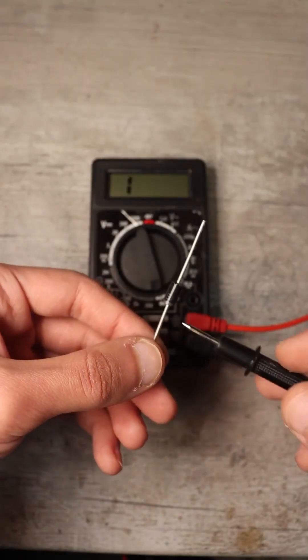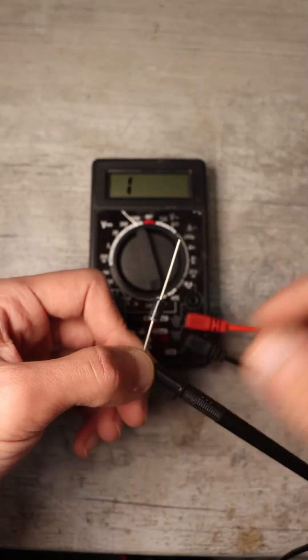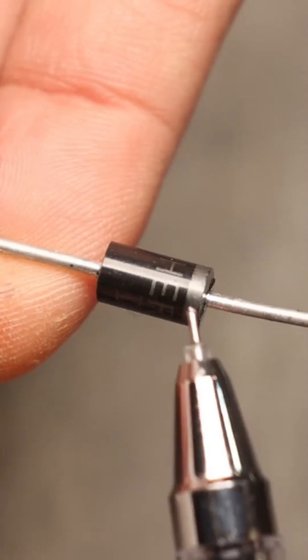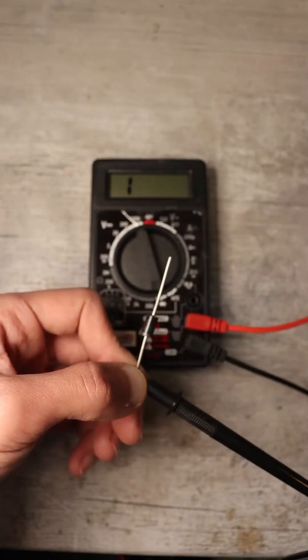Next, take the diode. Connect the black probe of the multimeter to the cathode of the diode where the line or stripe is drawn and the red probe to the anode.